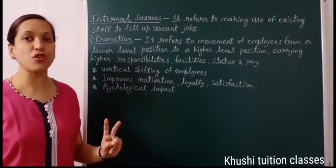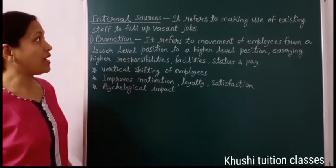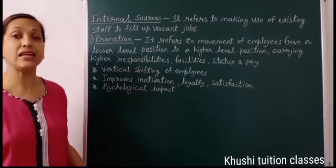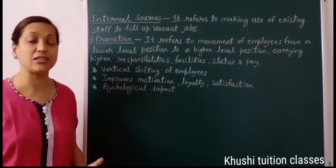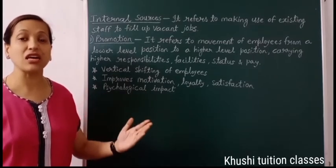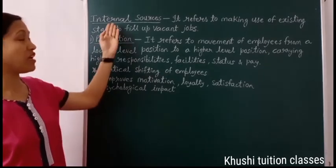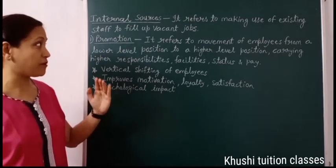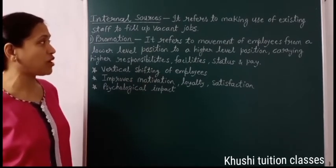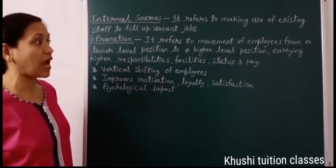There are two main sources of recruitment: internal source and external source. We start with internal source. It refers to making use of existing staff to fill up vacant jobs. In internal source, our organization's existing employees are promoted or transferred to higher posts. There are two main types of internal source: promotion and transfer. Promotion refers to movement of employees from a lower level position to a higher level position, carrying higher responsibilities, facilities, status and pay.